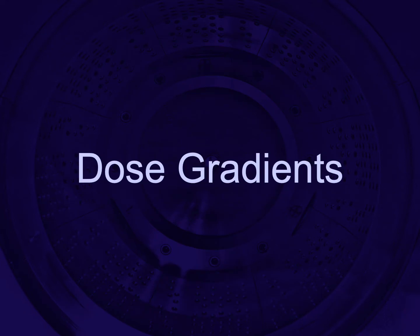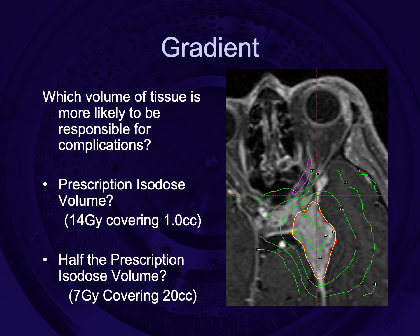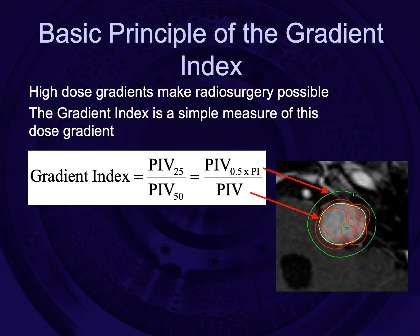So let's look at dose gradients. With improved treatment delivery technology yielding increasingly conformal treatment plans, there's a decreasing amount of normal tissue covered by the prescription isodose — as in this very conformal cavernous sinus meningioma. The vast majority of dose deposited in normal tissues comes from outside the prescription isodose, and it's these lower doses that have been shown to predict the incidence of symptomatic radiation necrosis. The gradient index is a very simple way of quantifying the dose fall-off outside the prescription isodose, which should minimise complications.